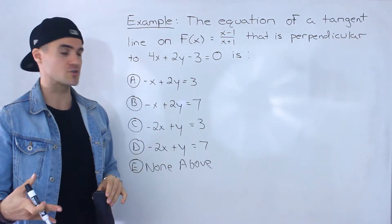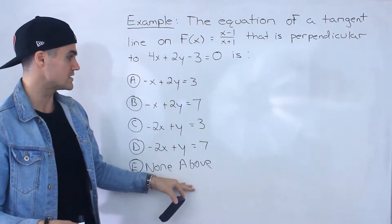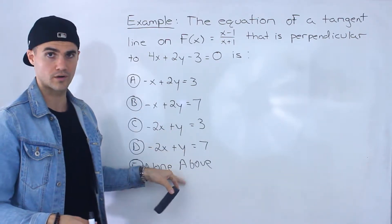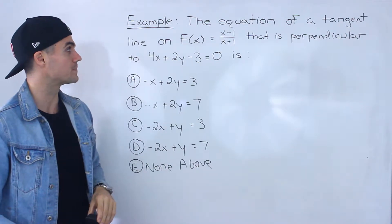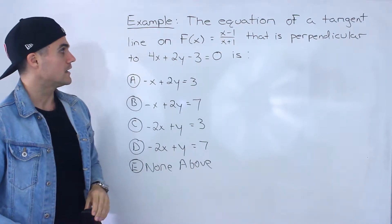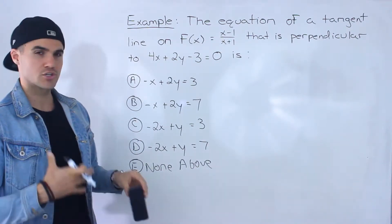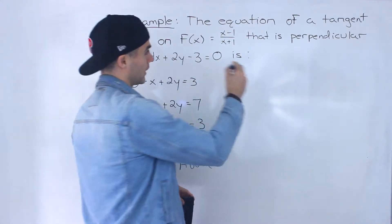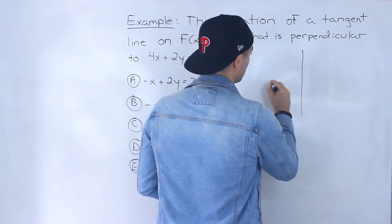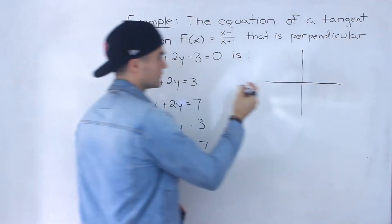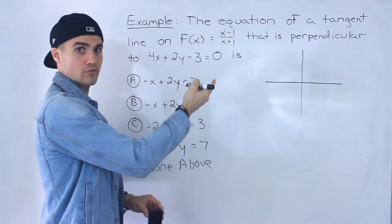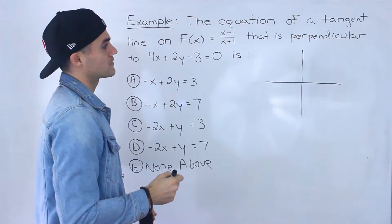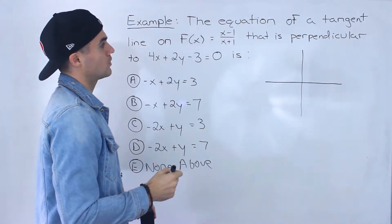This is a multiple choice question, so notice we've got these different possibilities — four lines or none of the above. To start this question off, I'm going to show you a quick visual of what's going on, so I'll draw a quick graph of f of x. You don't necessarily have to draw a graph to solve this question, but this is not too bad of a function to work with.